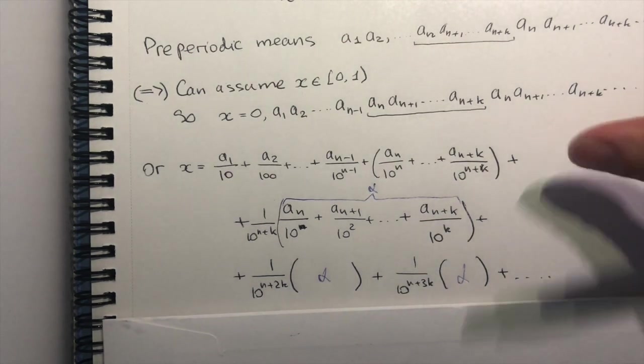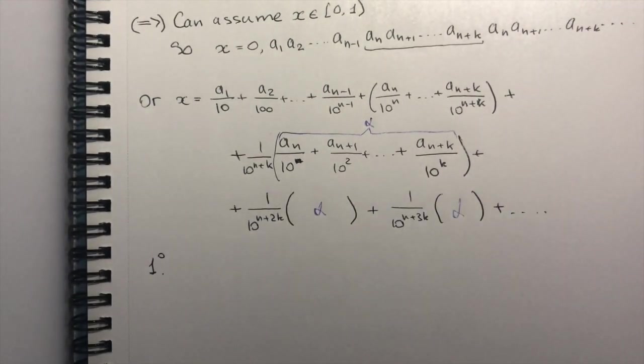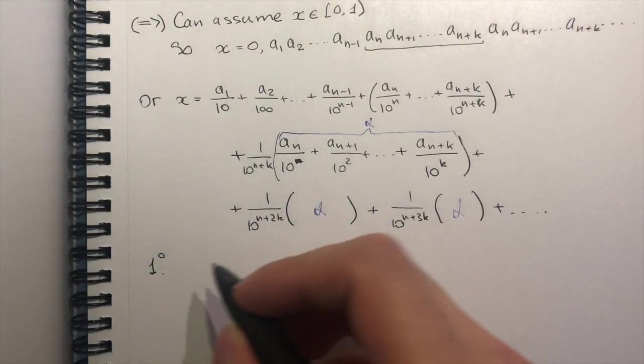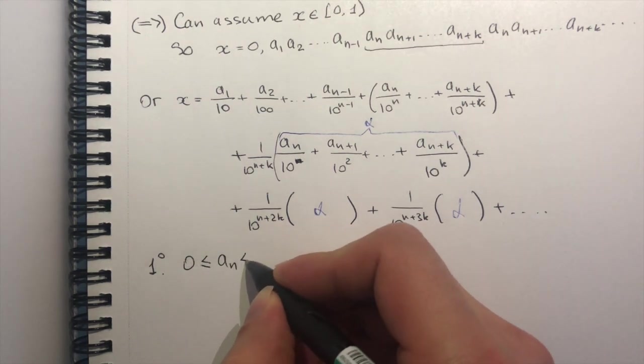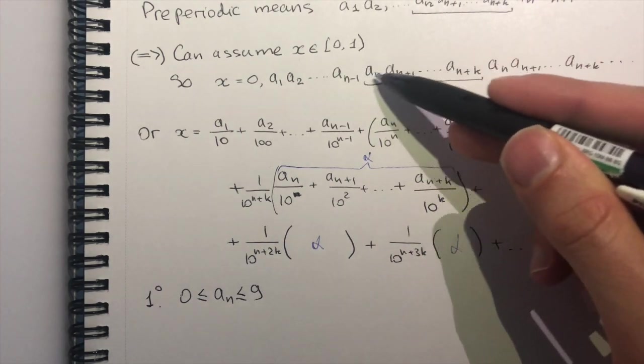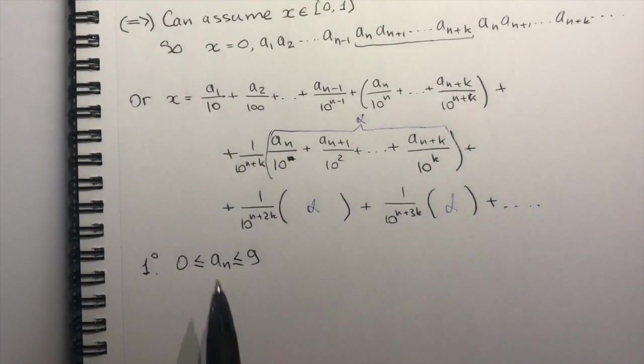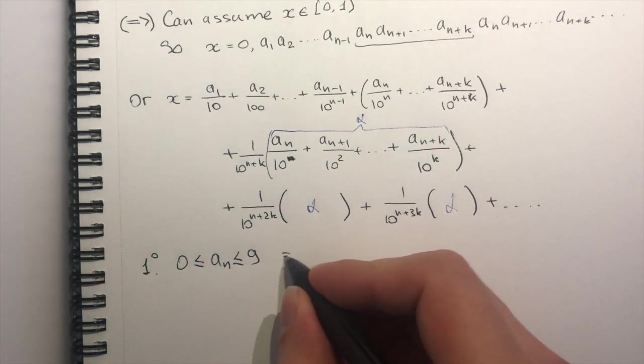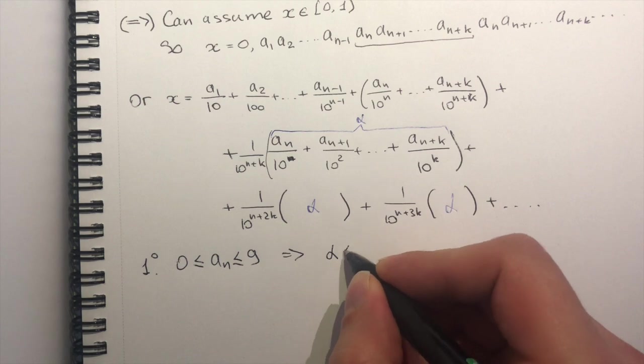Now, I don't want to solve everything. I still want to leave something for you to think about. So what you should remember is that every aₙ is chosen between zero and nine, right? It's a decimal expansion. Numbers cannot exceed nine.